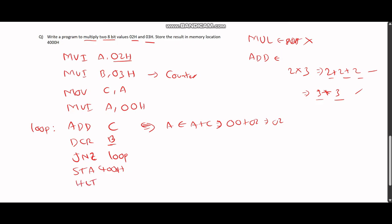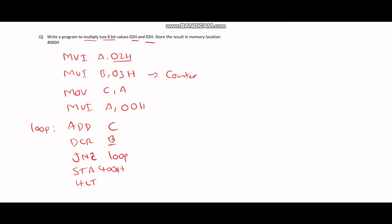Let me explain it to you once again. So initially, the value of A is 02H, the value of B is 03H. Now, we move the value of A to C, which means C also gets 02H, and then we clear the accumulator value and reset it to 00H.